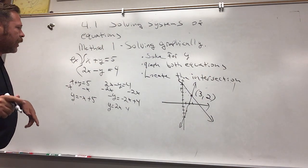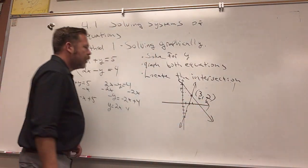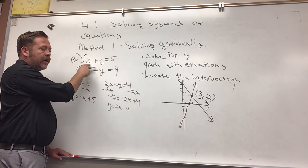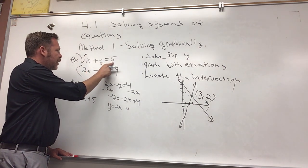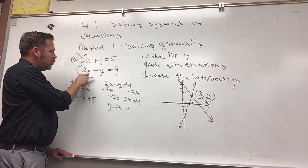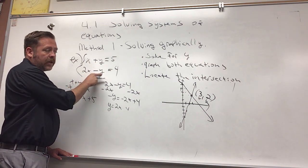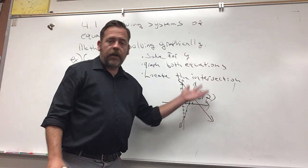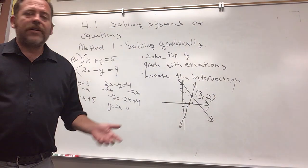But when I say it's a solution, let's check out why. Let's take the x and y and we're going to plug it into the original equations. If I replace x with 3 and y with 2, 3 plus 2 is 5. If I replace this x with 3, 2 times 3 is 6, and 6 minus our y value of 2 is 4. That's the only combination of two numbers that could make this equation true.